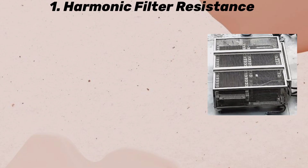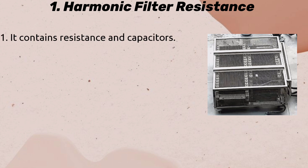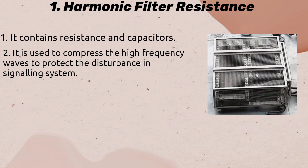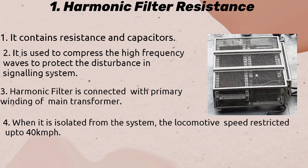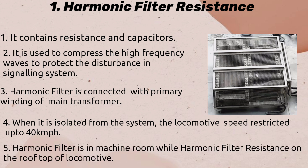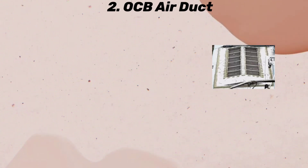Harmonic Filter Resistance: It contains resistance and capacitors. It is used to compress high-frequency waves to protect disturbance in the signaling system. Harmonic filter is connected with the primary winding of the main transformer. When it is isolated from the system, the locomotive speed is restricted up to 40 kmph. The Harmonic Filter is in the machine room, while the Harmonic Filter Resistance is on the roof of the locomotive.